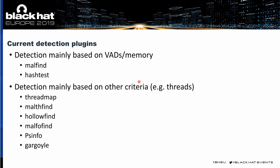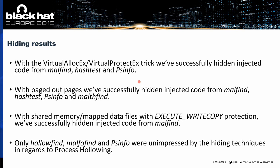Some of the plugins we evaluated with those hiding techniques included ones mainly looking at VAD information — mainly Malfind and HashDump — and also plugins basing their decisions on criteria such as threads and the process environment block. Our results: with the protection trick — changing protection after initial read-only — we successfully hid from Malfind, HashDump, and PSInfo. With paged-out pages, we were able to hide from Malfind, HashDump, PSInfo, and Malfind. With the shared memory trick, we hid from Malfind. Only HollowFind, MalForFind, and PSInfo were unimpressed by those hiding techniques regarding process hollowing, because those plugins don't care about the VAD protection.